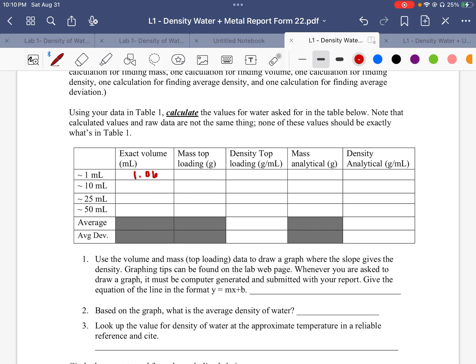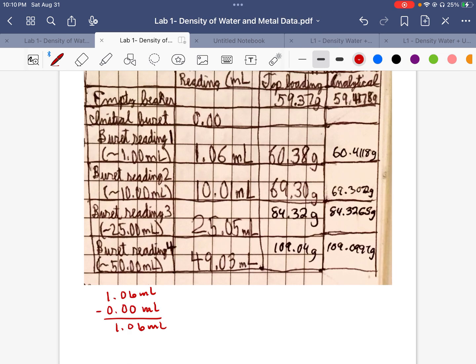Now when we talk about the mass of the top loading, we're going to go back here and notice that we have empty beaker for both top loading and analytical. So in order to deal with those, I've got to take 60.38, which is the mass of the beaker, plus 1 mil,